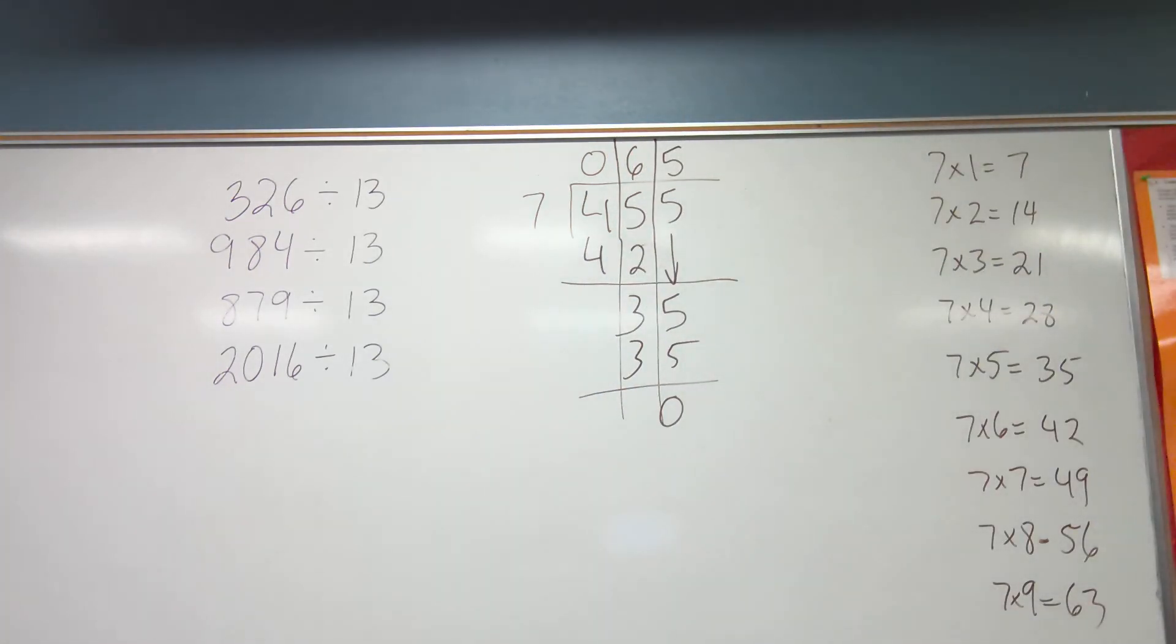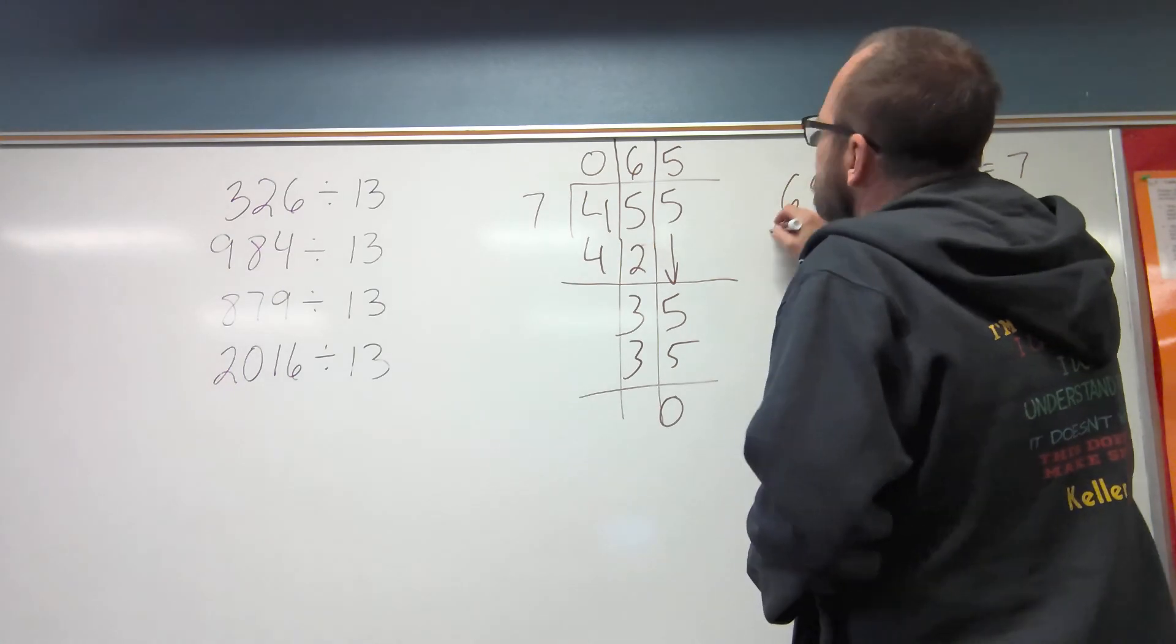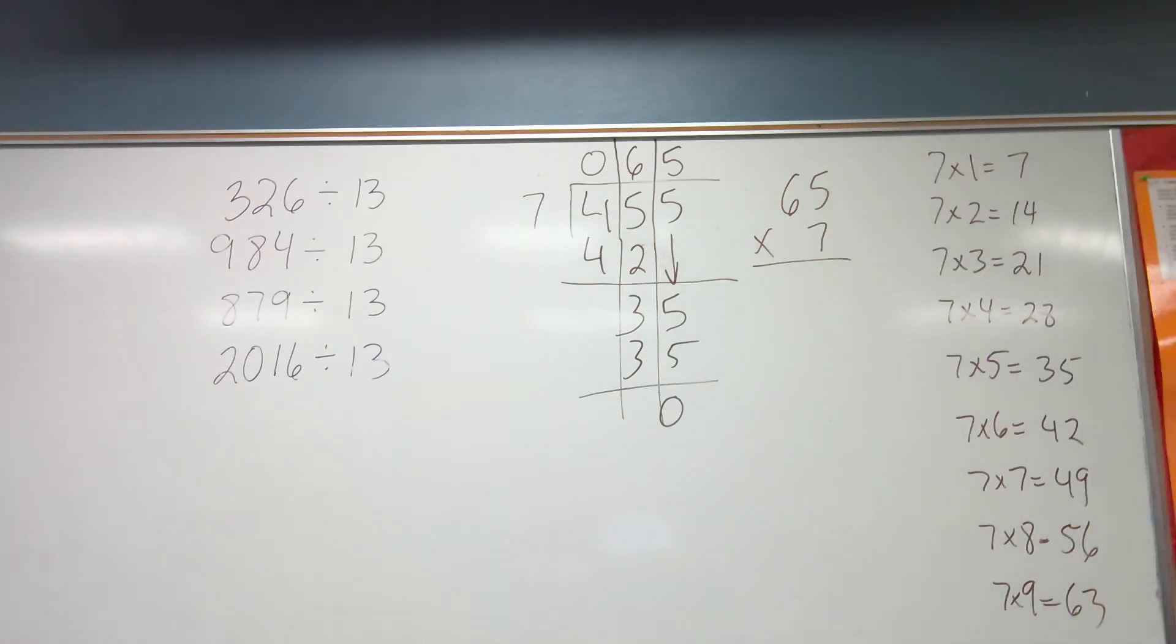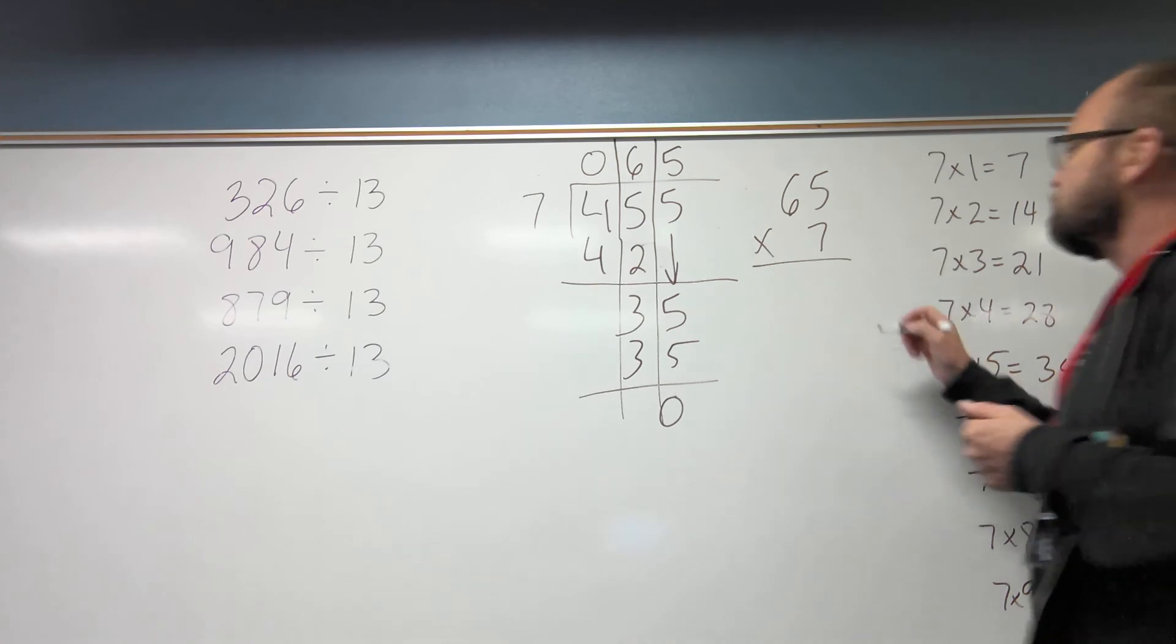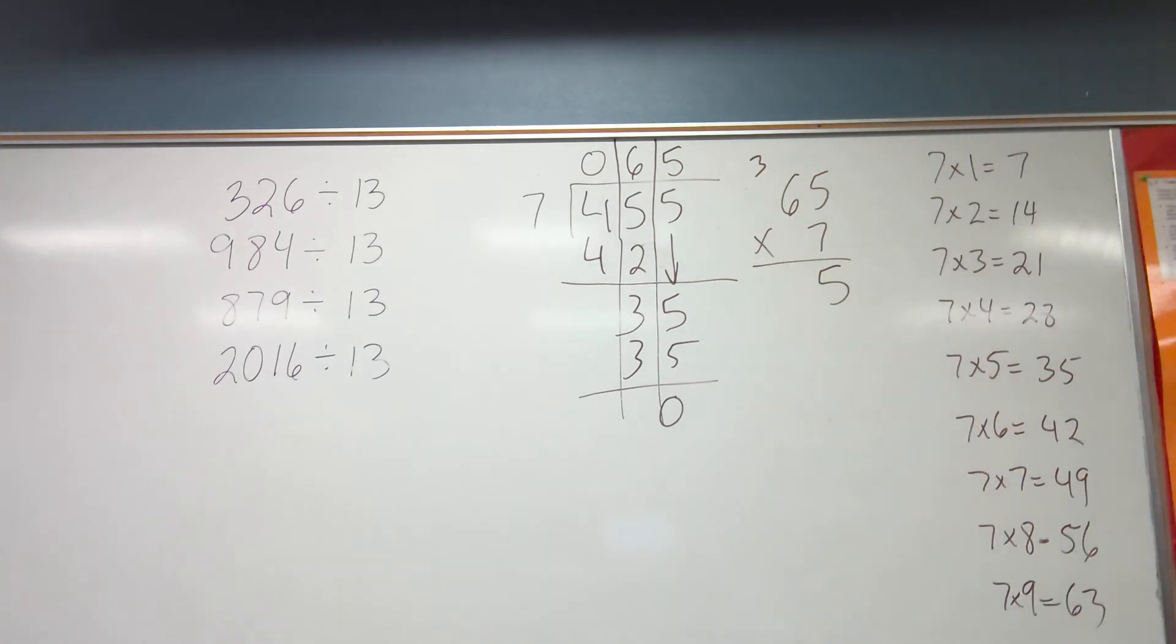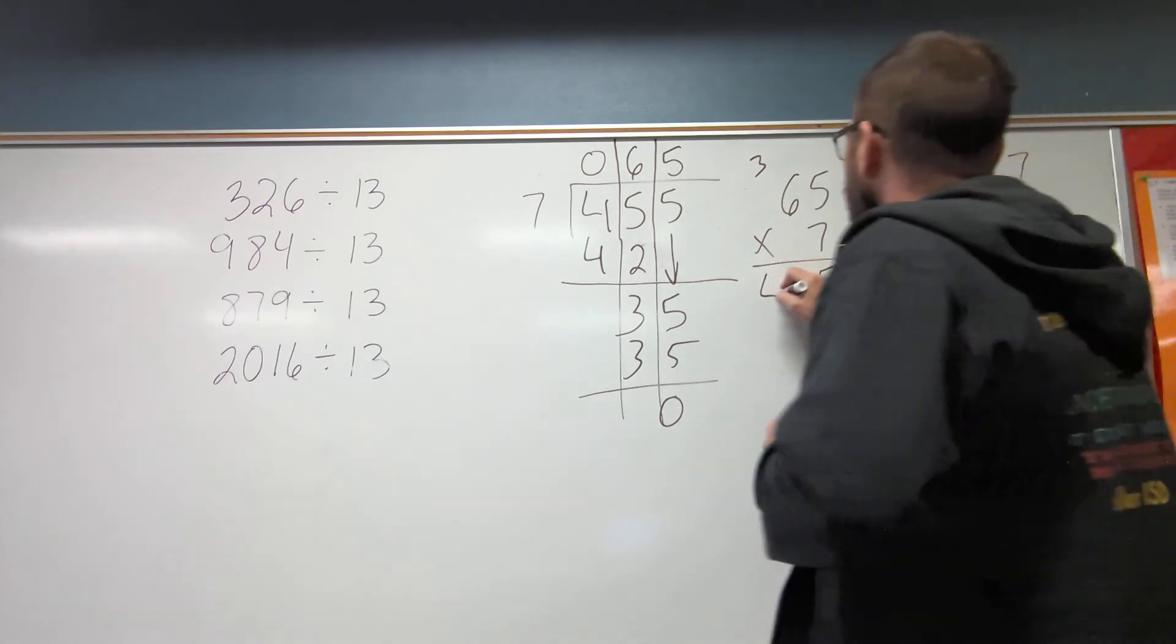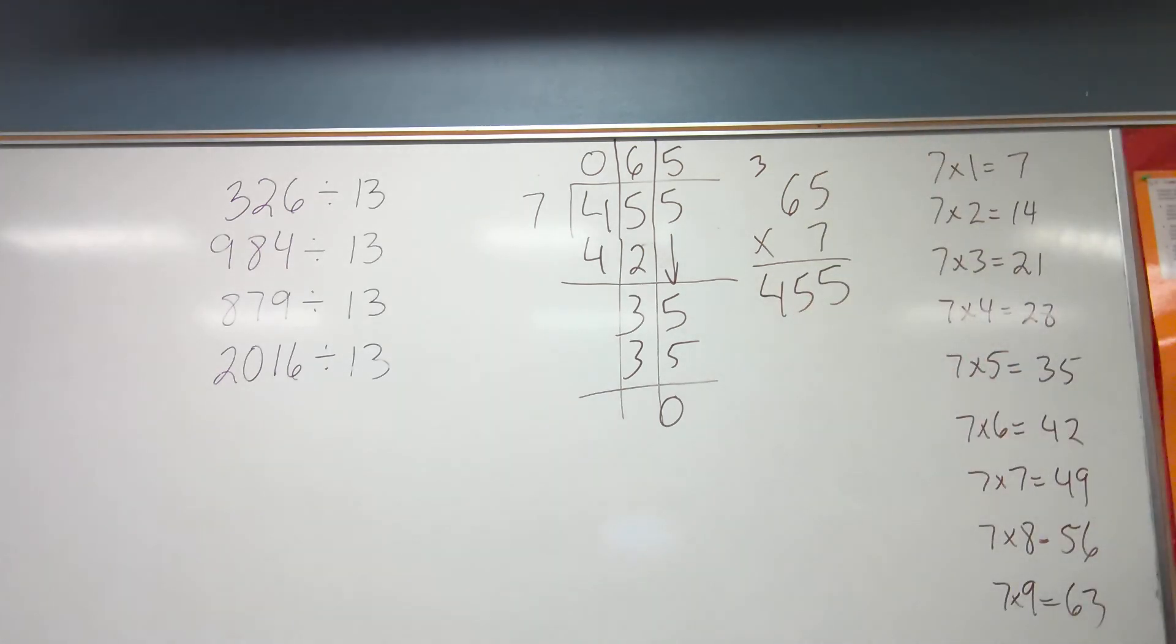But Zane texts me again, and he's like, dude, I really want to get 100 on this. How in the world can I check it? And so I say, dude, this is how you can check it. And we multiply our quotient times our divisor. We don't have a remainder. So when I multiply my quotient times my divisor, I should get 455. 7 times 5 is 35. 7 times 6 is 42. Plus 3 is 45. So unless I made the same mistake here as I did here, then I got it correct.